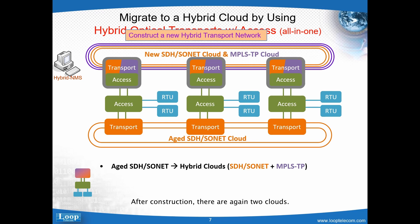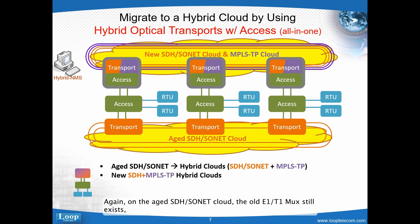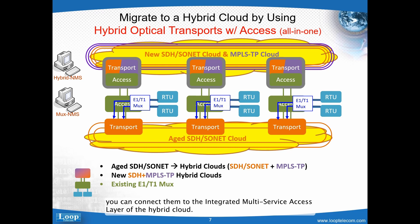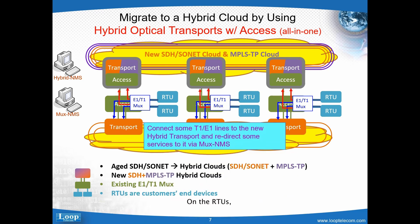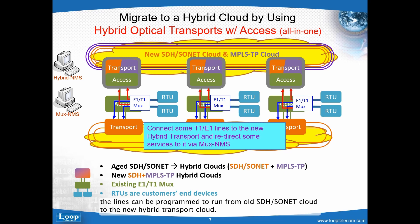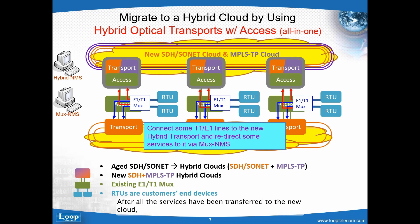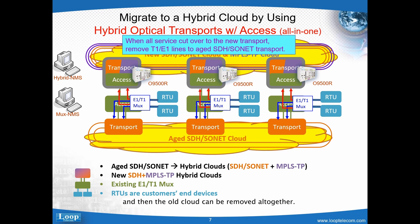After construction, there are again two clouds. On the aged SDH Sonet cloud, the old E1T1 MUX still exists, and RTUs are still running on the old E1T1 MUX to the aged SDH Sonet cloud. If the E1T1 MUX still has extra E1T1 lines, you can connect them to the integrated multi-service access layer of the hybrid cloud. The lines can be programmed to run from the old SDH Sonet cloud to the new hybrid transport cloud. At the beginning, you can have all services running on SDH Sonet uplinks in the new cloud — including critical ones — with similar characteristics as in the old SDH Sonet cloud. After all services have been transferred to the new cloud, the E1T1 lines to the old SDH Sonet cloud can be taken out, and the old cloud removed altogether.